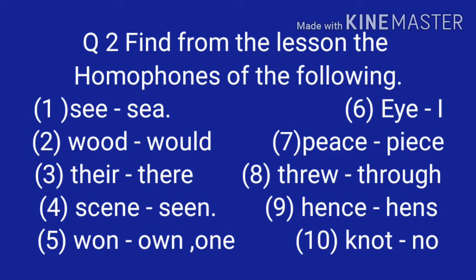Question number two: find from the lesson the homophone of the following. Number 1: SWEECE/ACE. Number 2: WOULD. Number 3: THERE/THEIR. Number 4: SCENE/SEEN. Number 5: WON/OWN or ONE. Number 6: EYE/I. Number 7: PEACE/PIECE. Number 8: THREW/THROUGH. Number 9: HENCE/HENS. Number 10: KNOT/NOT.